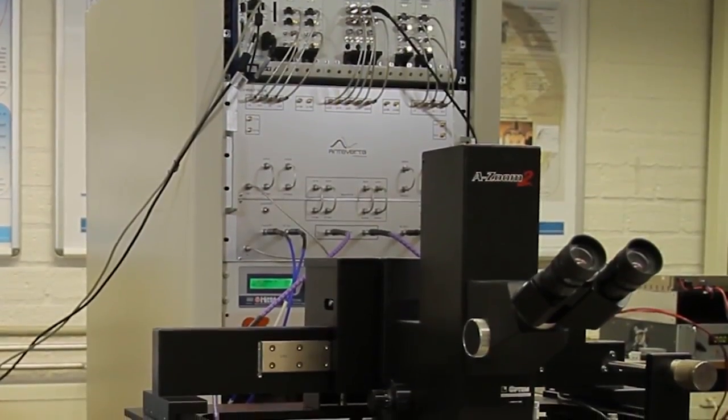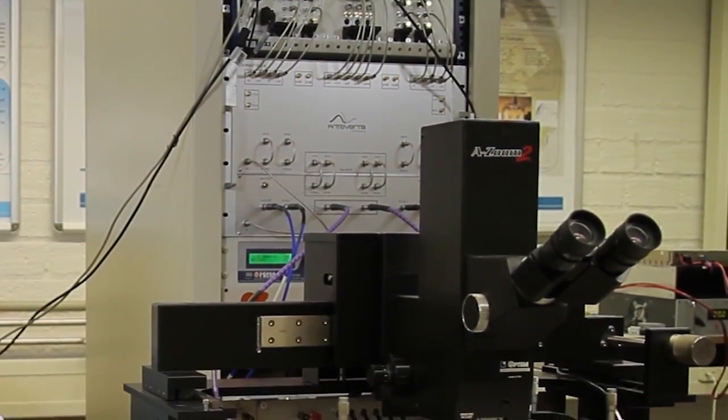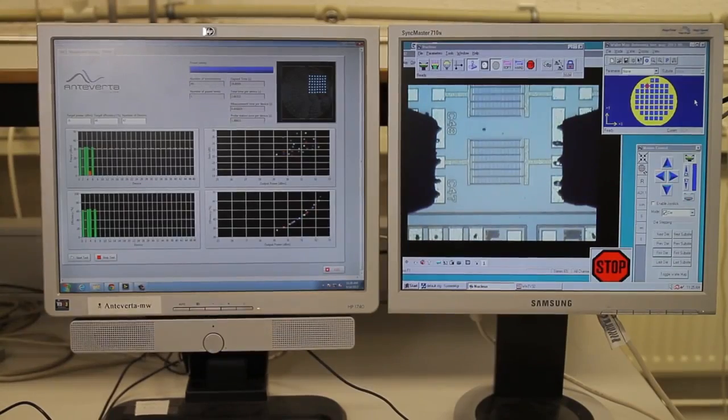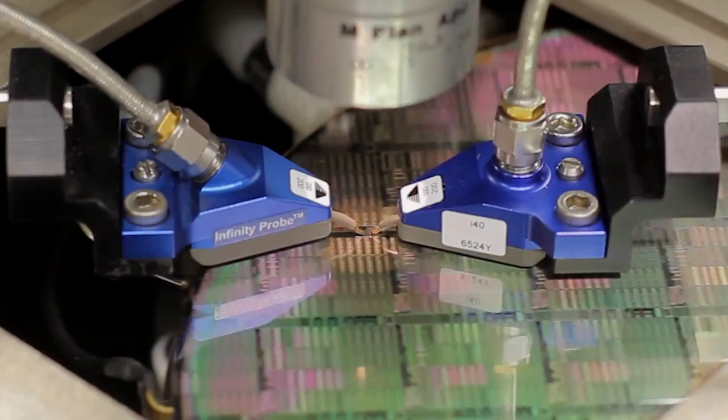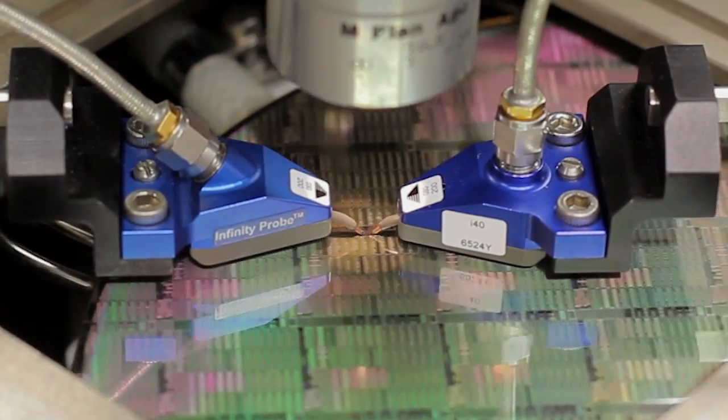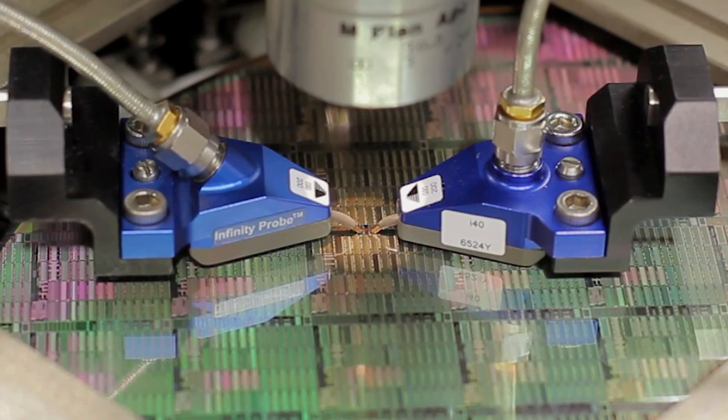This represents a speed improvement of at least 100 times over conventional load pool systems. So clearly this demo shows how by using the MT2000 system speed is not an issue anymore for load pool and how we can enable load pool testing of large batches of devices even for production testing.